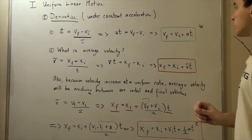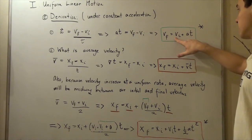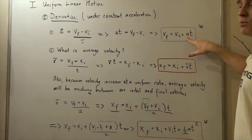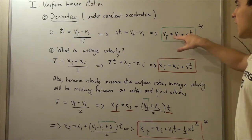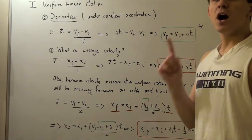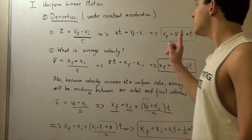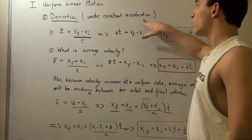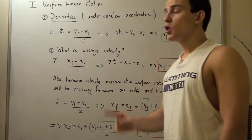In other words, if we know our initial velocity, our acceleration, and our time, we can use these variables to find the final velocity of our object. This only works for constant acceleration.